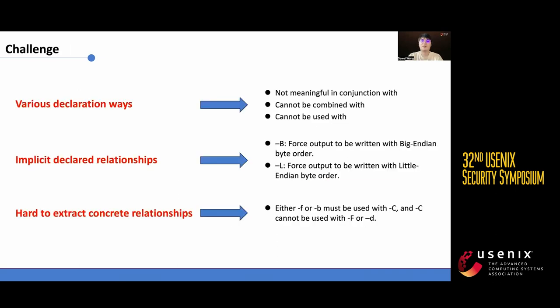However, there are three challenges to achieving this goal. Firstly, the same relationship may have multiple declarations, making traditional match-based methods less suitable. For example,